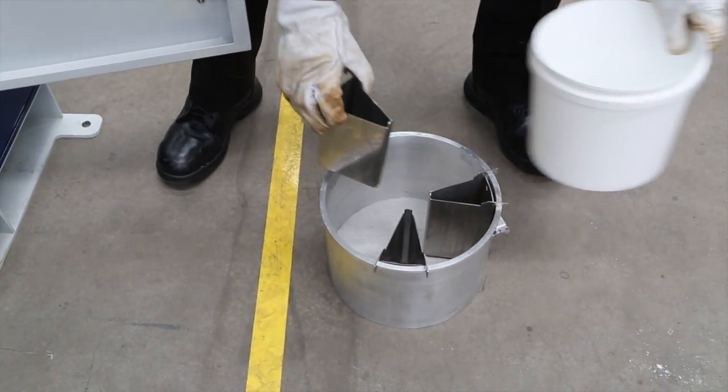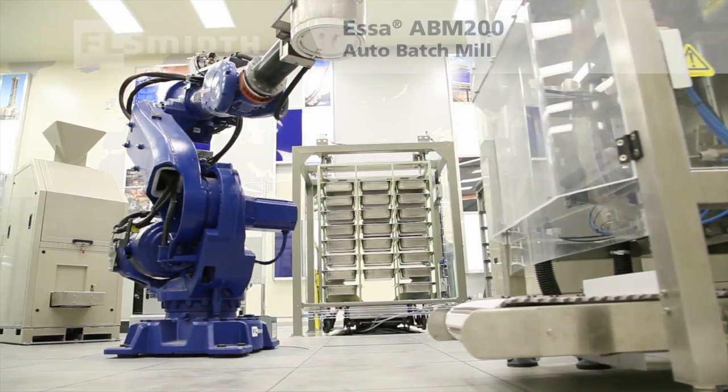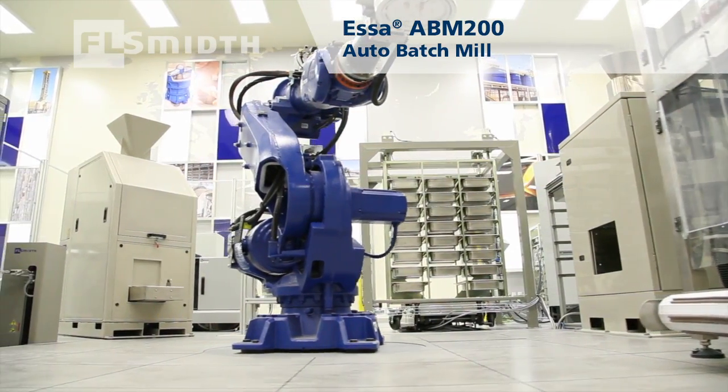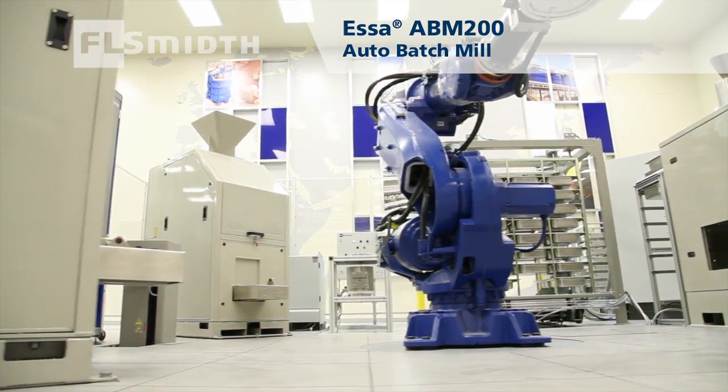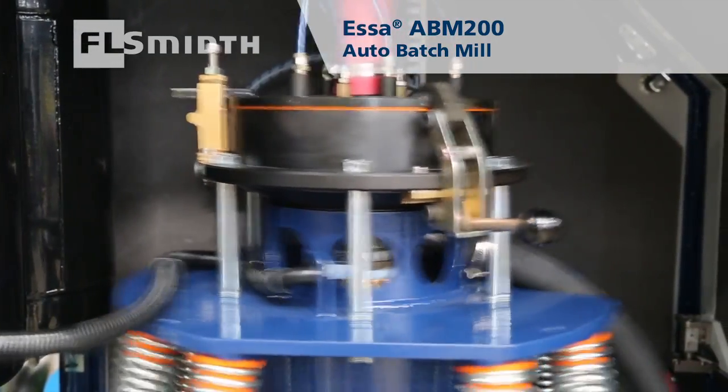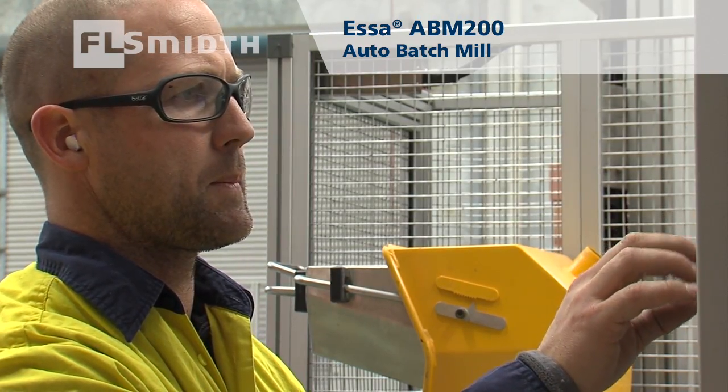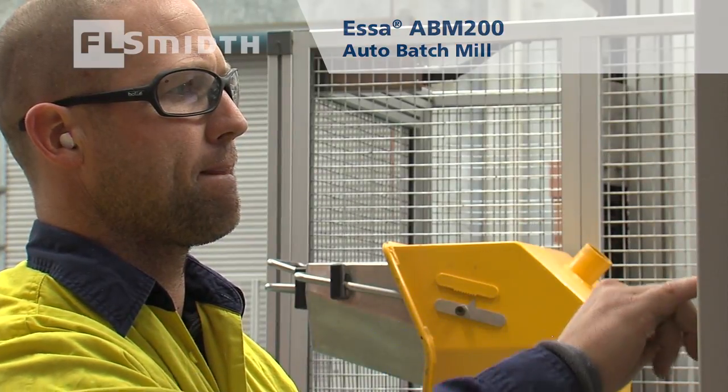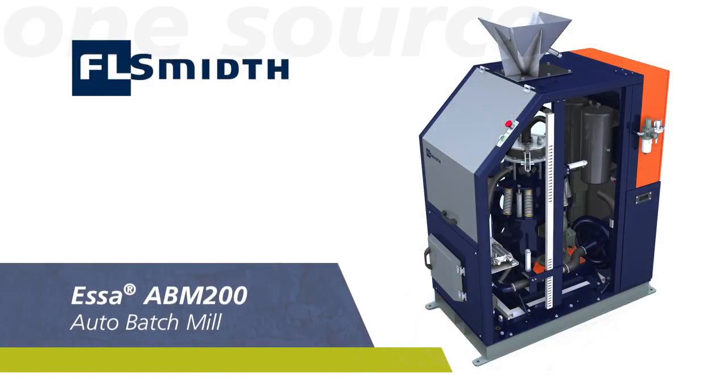The ABM200 auto batch is a highly productive alternative to traditional manually operated ring mills, enabling a single operator to manage multiple mills safely and effectively. The ESSA ABM200 auto batch mill from FL-Smit.